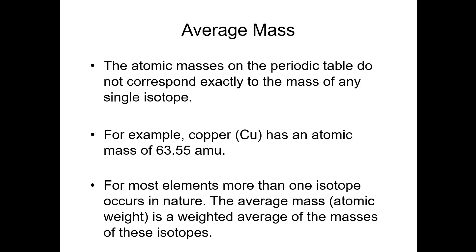For most elements, there is more than one isotope that occurs in nature. For some elements, there might be four or five stable isotopes. The average mass — these are all synonymous terms: average mass, atomic mass, atomic weight — this number on the periodic table is a weighted average of the masses of these isotopes.